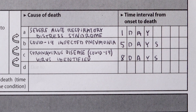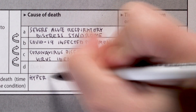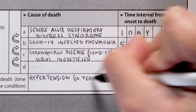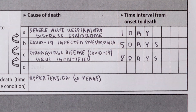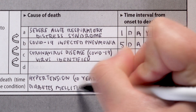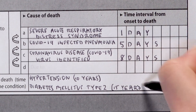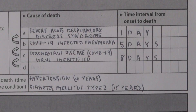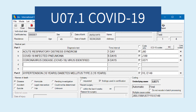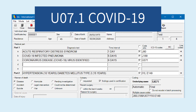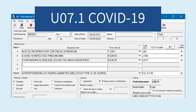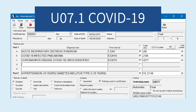Lastly, in part 2, detail the significant conditions that contributed to the death as hypertension (10 years) and diabetes mellitus type 2 (15 years). The underlying cause of death can now be correctly coded as U07.1 COVID-19.